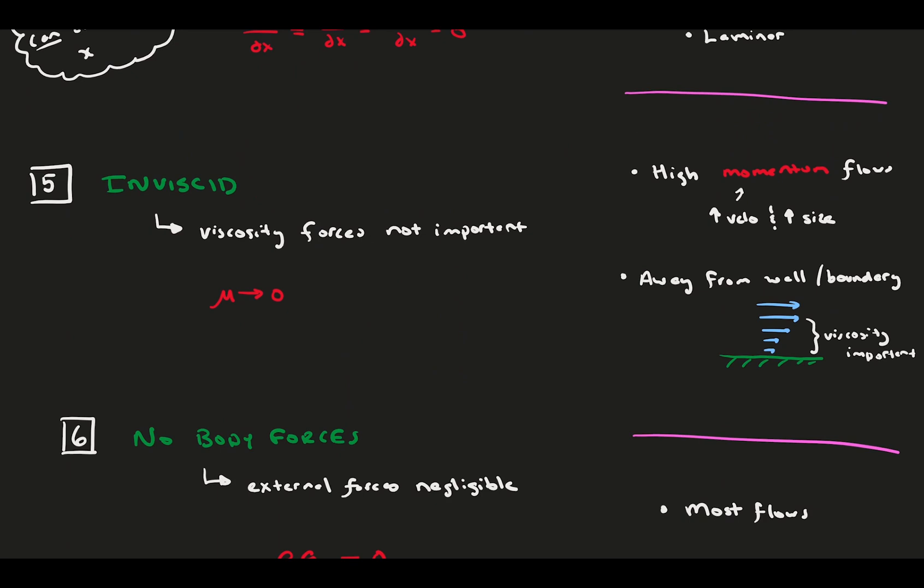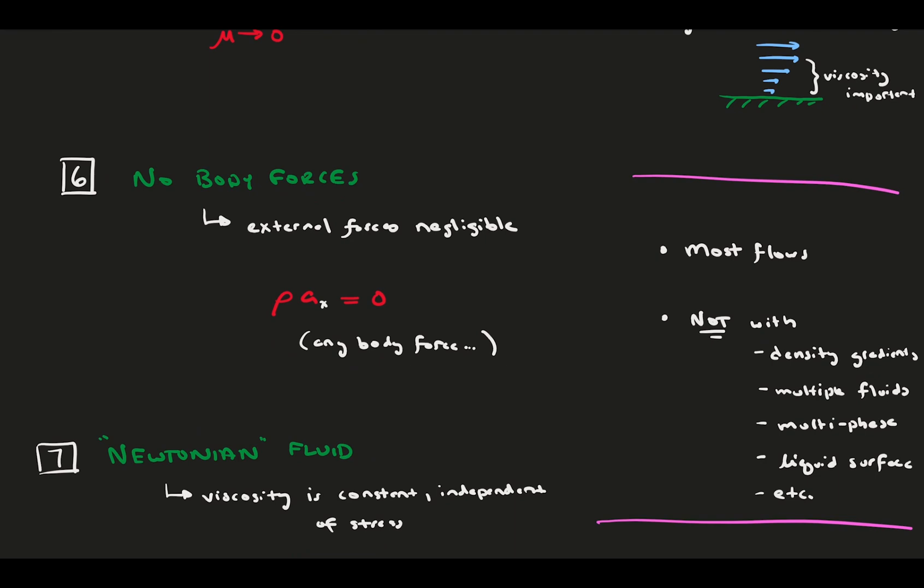The inviscid assumption means you can ignore viscosity completely and the Newtonian assumption means viscosity is constant. Lastly, there are no body forces in the problem, you can easily set them to zero.